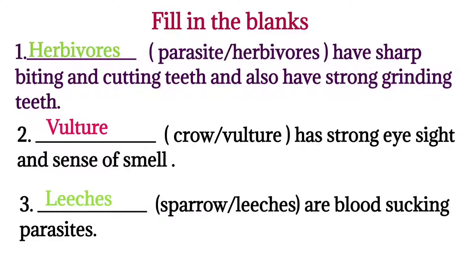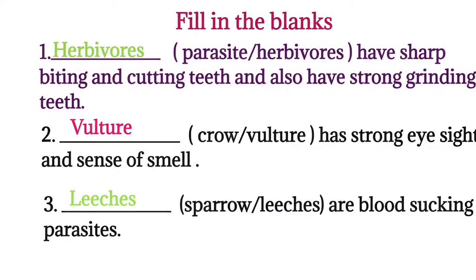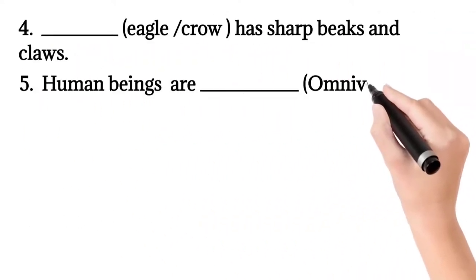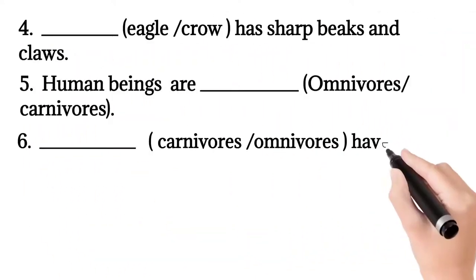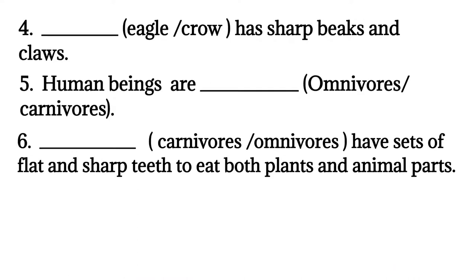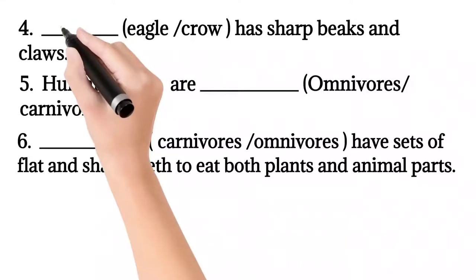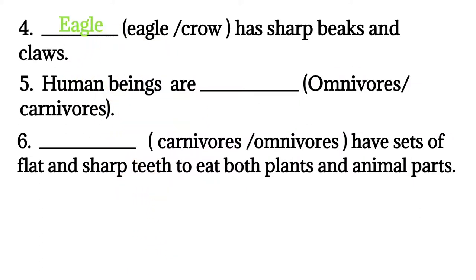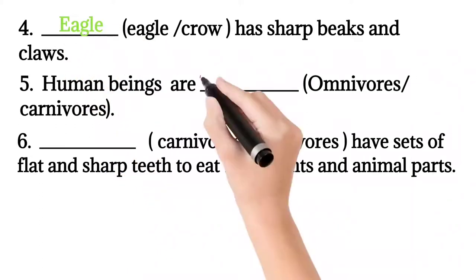Parasites do not have teeth. Question four: eagle or crow has sharp beaks and claws? Answer: eagle, because eagle is a carnivorous bird. Sharp beaks help them to tear flesh.